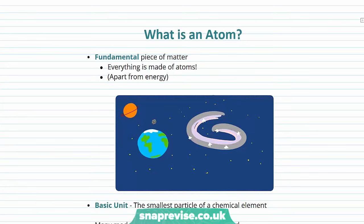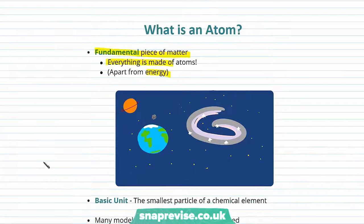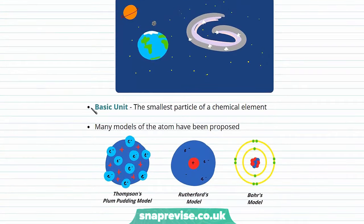So what is an atom? Well, an atom is the fundamental piece of matter. Everything is made of atoms, apart from energy. So what I mean by that is that you're made from atoms, the food you eat is made from atoms, our galaxy is made from atoms. Our atom is the basic unit — it's the smallest particle of a chemical element.